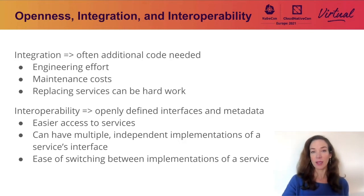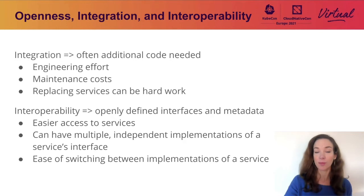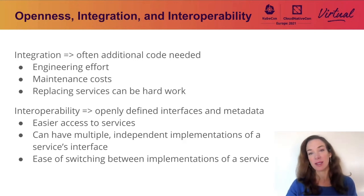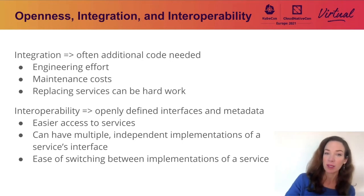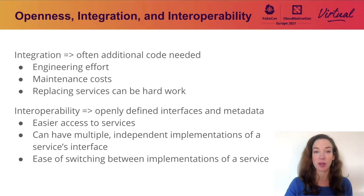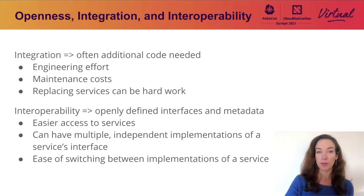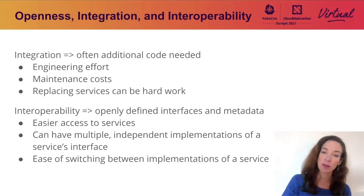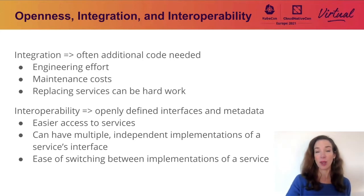The ability to replace one implementation of a service with another that operates in the same way, without causing failures, is interoperability. Well-defined public interfaces enable interoperability by enabling both access and multiple implementations. The result for end users is that they have a choice in which implementation to consume, and the ability to switch between implementations without experiencing any failures. In addition to open interfaces, standardized metadata is another abstraction that enables interoperability. Standardized metadata enables systems to incorporate content from other disparate and independent systems. In other words, interoperability is achieved through data formats and communication protocols which the systems can use to function together in a standardized manner without deep customizations.